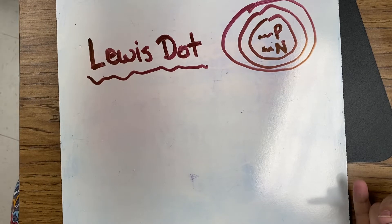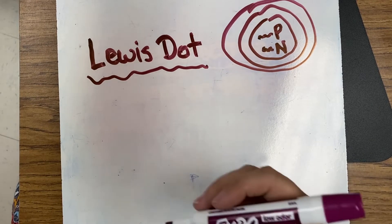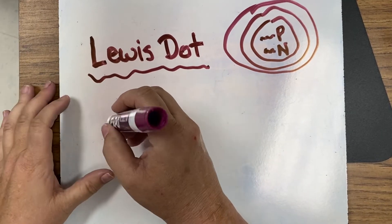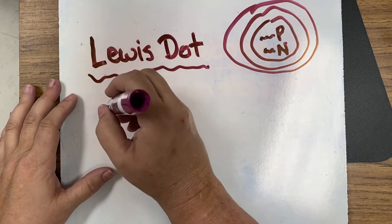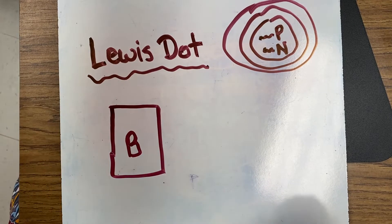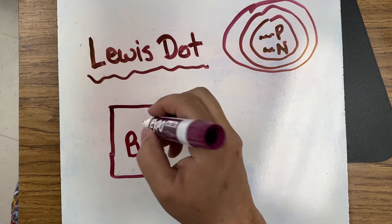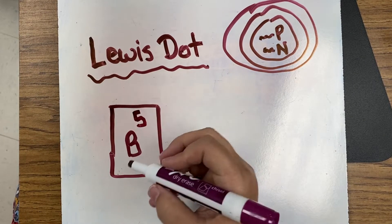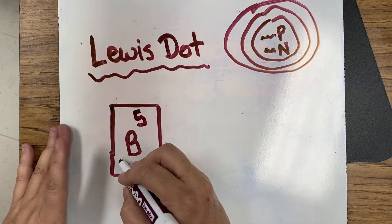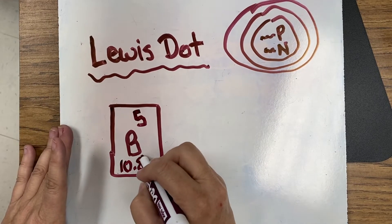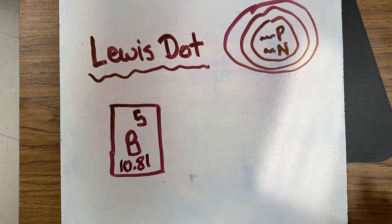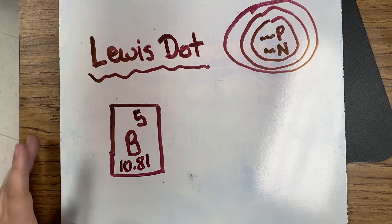So if I'm looking at the element, let me draw a little box real quickly. So let's say we're doing boron. So the symbol is B, and the atomic number is 5, and the atomic mass is 10.81. So we know from this we can figure out protons, neutrons, electrons.